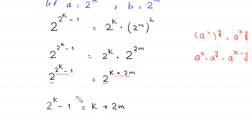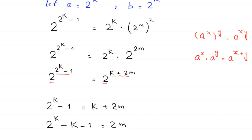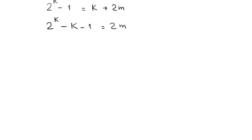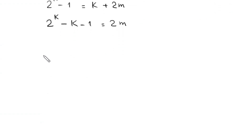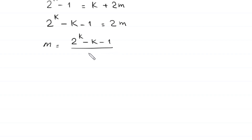Moving k to the left-hand side, this becomes 2 to the power k minus k minus 1 is equal to 2 times m. Dividing both sides by 2, this implies that m is equal to (2 to the power k minus k minus 1) divided by 2.